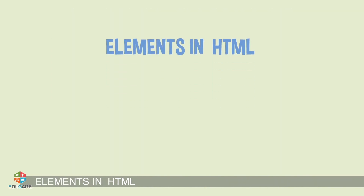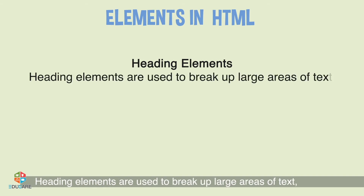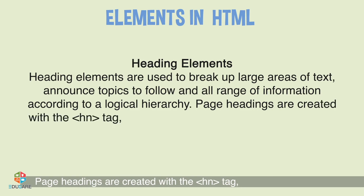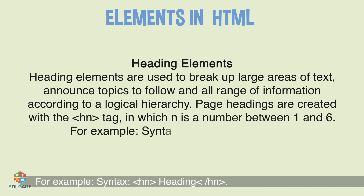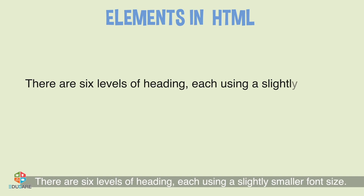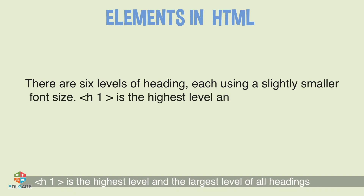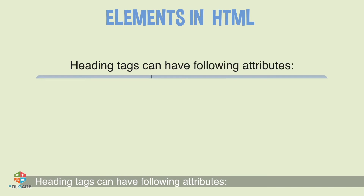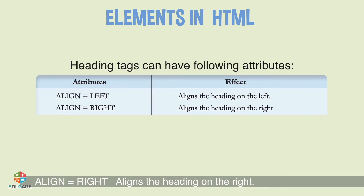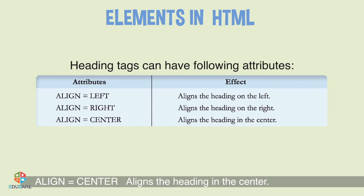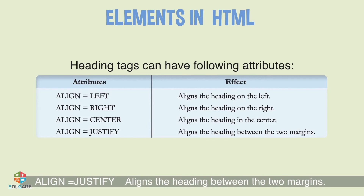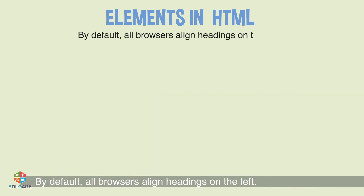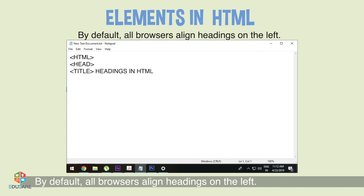Heading Elements: Heading elements are used to break up large areas of text, announce topics to follow, and arrange information according to a logical hierarchy. Page headings are created with the HN tag where N is a number between 1 and 6. There are 6 levels of heading, each using a slightly smaller font size — H1 is the highest and largest, H6 is the lowest and smallest. Heading tags can have align attributes: left, right, center, or justify. By default, all browsers align headings on the left.